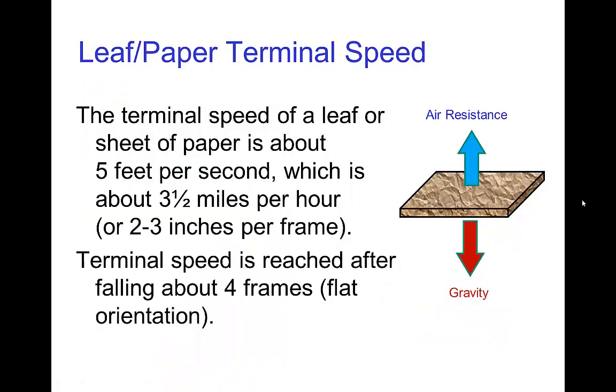For a sheet of paper or a leaf, the terminal velocity is about five feet per second, which translates to two to three inches per frame. And that terminal velocity is reached rather quickly. So the accelerating motion is only for about the first four frames. And then something like a leaf or a sheet of paper, if it's falling, just travels straight down under the force of air resistance.